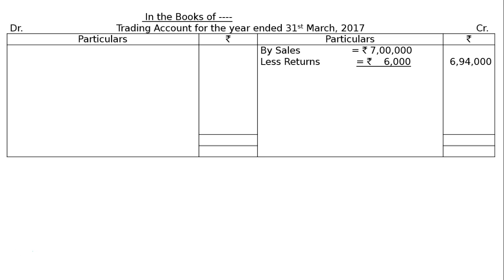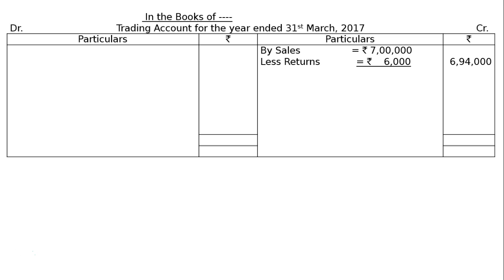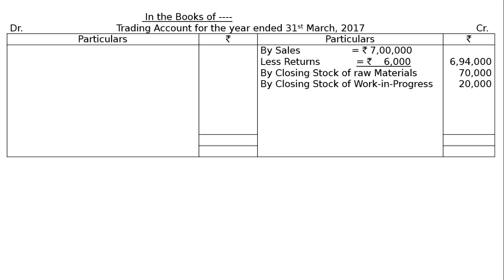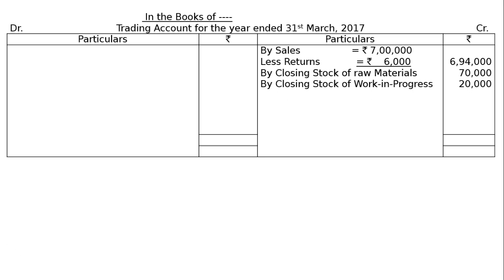Other items on the credit side are: by closing stock of raw materials, by closing stock of work in progress (semi-processed goods), and by closing stock of finished goods (already fully processed goods).